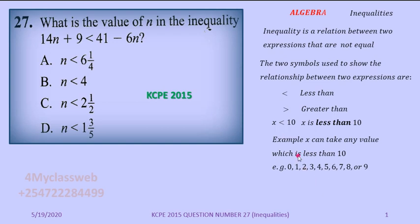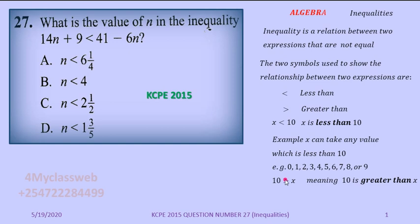I can write the same expression the other way: 10 > x, meaning 10 is greater than x. Looking at the symbol, the wider part is on the side of 10 and the narrow part is on the side of x, so whatever you put for x should be below 10. This expression and the previous one are just the same — the values of x remain 0 all the way up to 9.